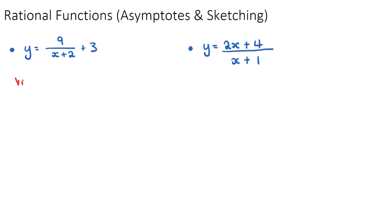To find the vertical asymptote of a rational function, we look at the denominator of the fraction part and set it equal to zero. Setting x plus two equal to zero gives x equals negative two. The reason we do this is because if x is negative two, y would be nine over negative two plus two plus three, which is nine over zero — undefined. That's why we let the denominator equal zero to find the vertical asymptote.